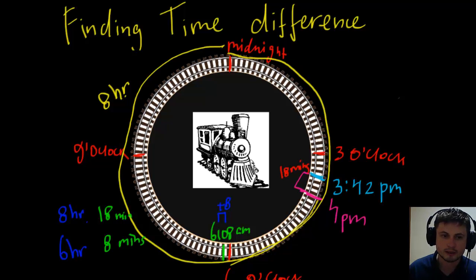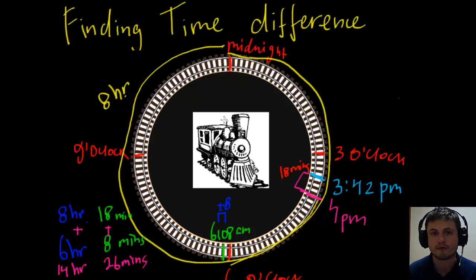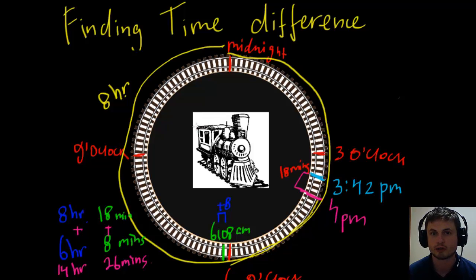Adding it all up: 6 plus 8 is 14 hours, and 18 plus 8 is 26 minutes. So the final answer is 14 hours and 26 minutes. One of us in class actually had this answer. This is the easier, more visual way of finding this. Hopefully it helps — for some reason this simple question gave us a lot of trouble. Thanks for watching and good luck!